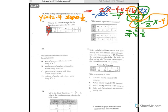Alright, number 20 says, what is the rate of change for the function represented by the table? So to figure out the rate of change, rate is the same thing as slope. And when you're given a table, you're going to use y2 minus y1 over x2 minus x1.